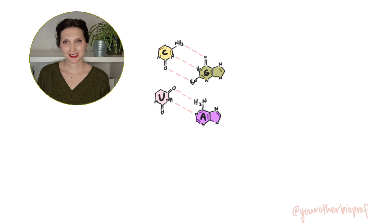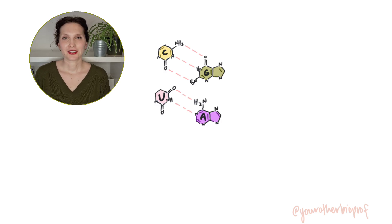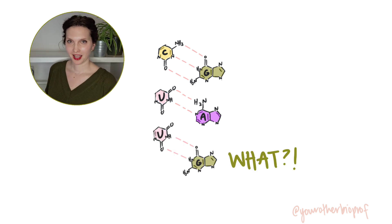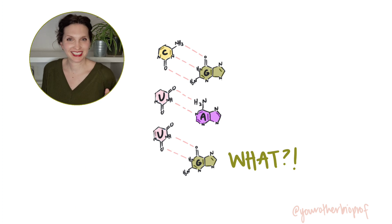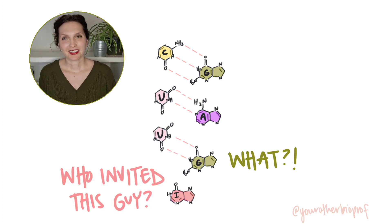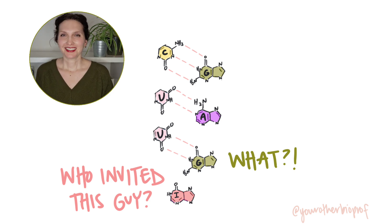Just when you've got it figured out — that in RNA, G pairs with C and A pairs with U — your teacher says 'just kidding, sometimes G pairs with U, and sometimes there's another base altogether.' Hi, biology friends, it's Sarah, your other biology professor. Let's talk about wobble.